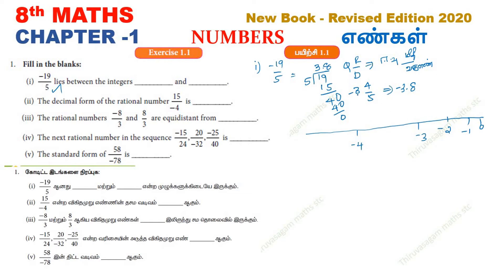If you work out the number, you can say minus 3. Then counting: 3 to 4. The accurate decimal value is 3.8, so minus 19 by 5 equals minus 3.8. Marking this on the number line, the integer values are minus 4 and minus 3. So the answer is minus 4 and minus 3.